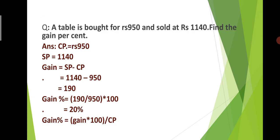That means the table was sold at Rs. 11.40. Now, how much percent profit was made? This type of Profit and Loss math comes in competitive exams, including B.A. level exams, so it is very important. So this question asks: how much profit was made from the table?